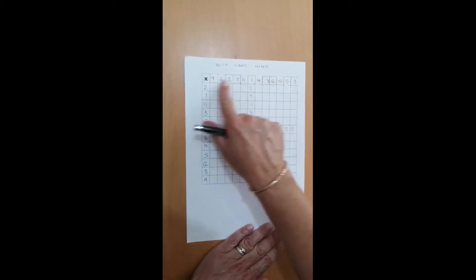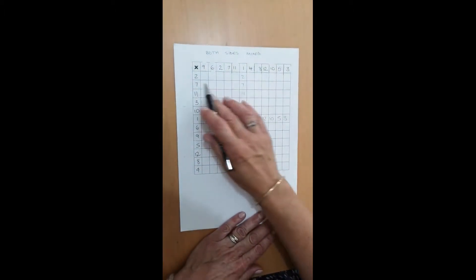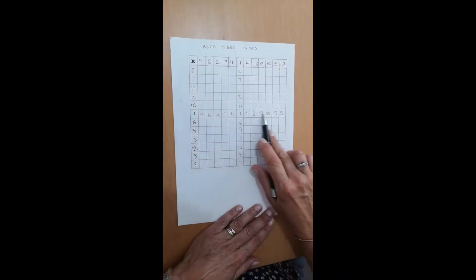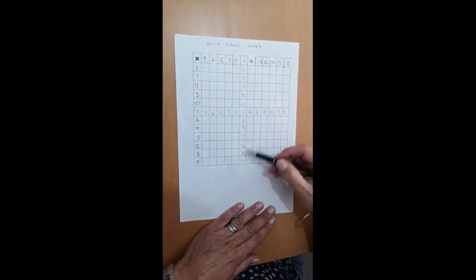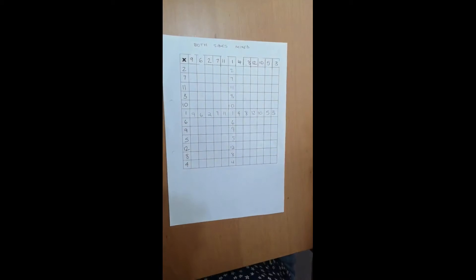So as you can see it says at the top both sides mixed so they're random. So again I've already done the one times table. I filled that in, one times table. So that's already done. Just because it's in the middle of the grid doesn't matter.